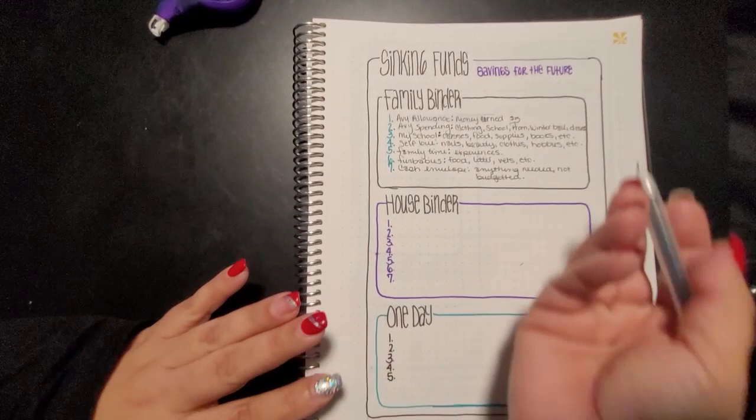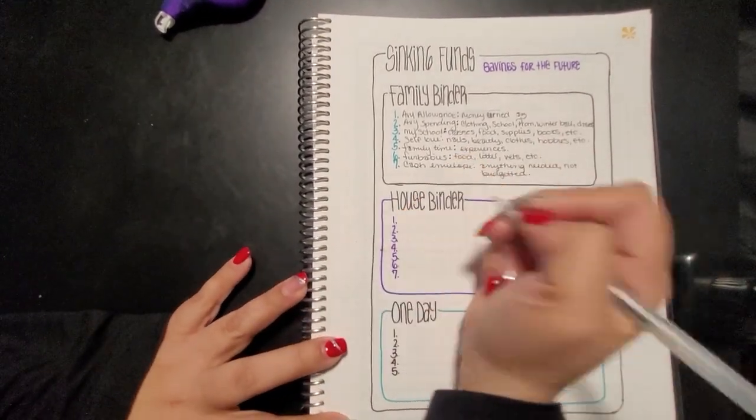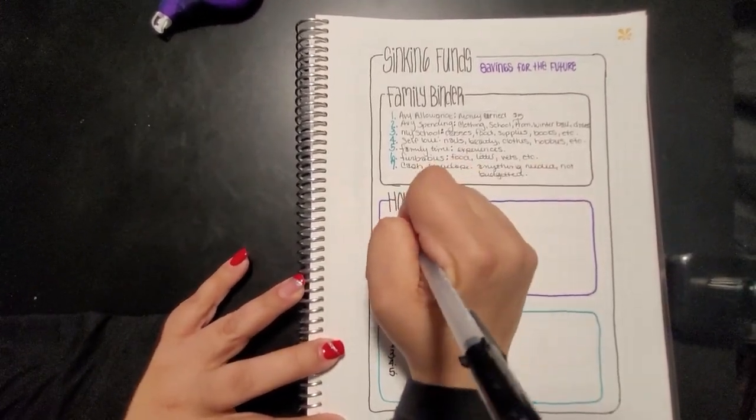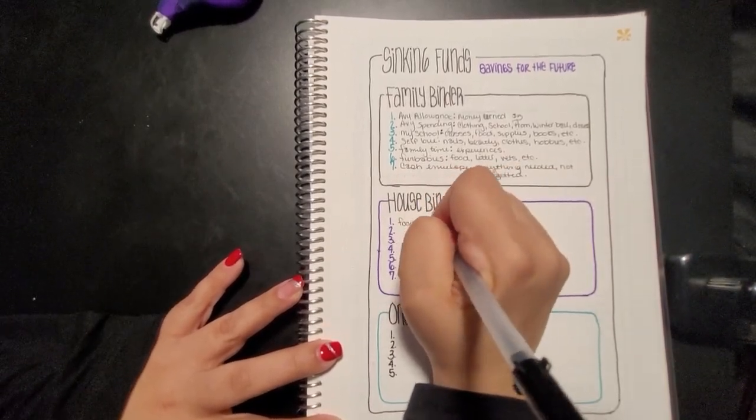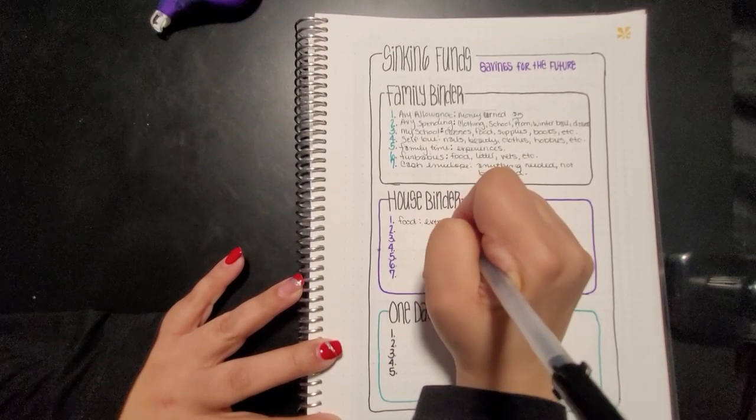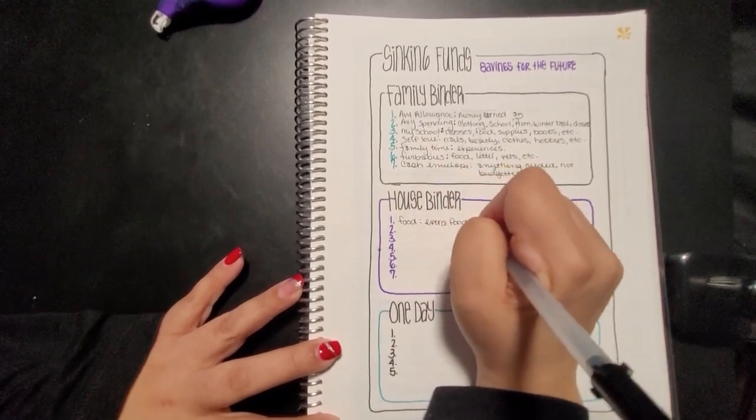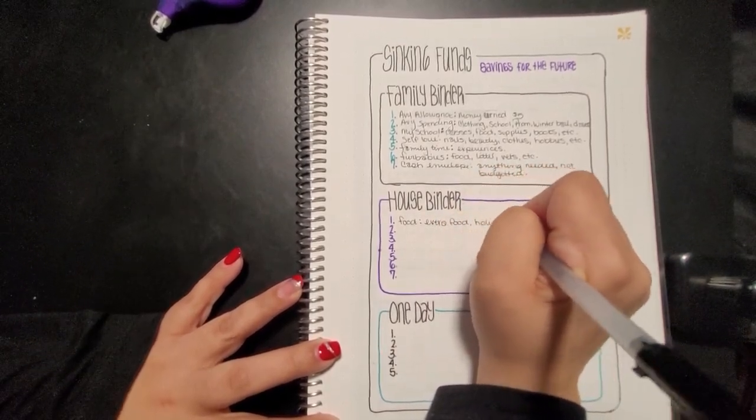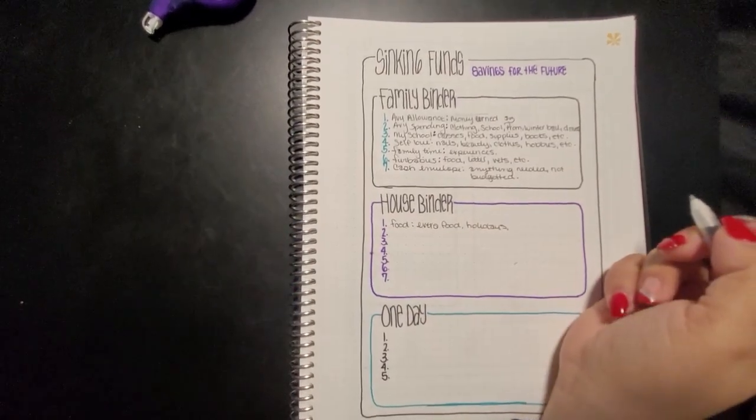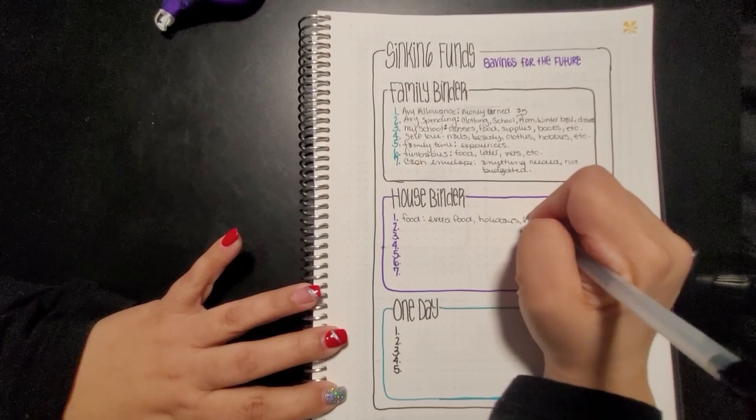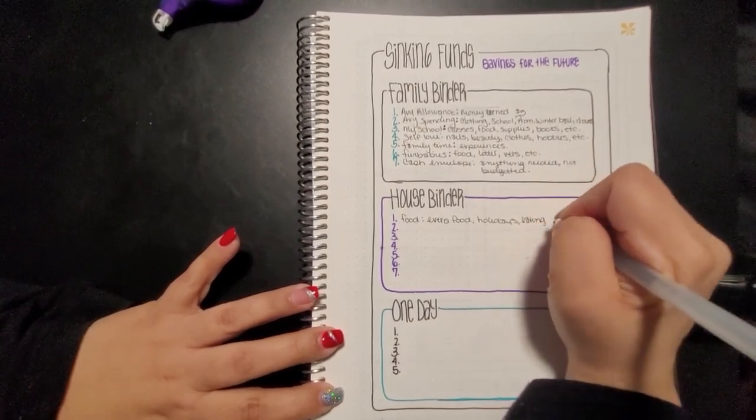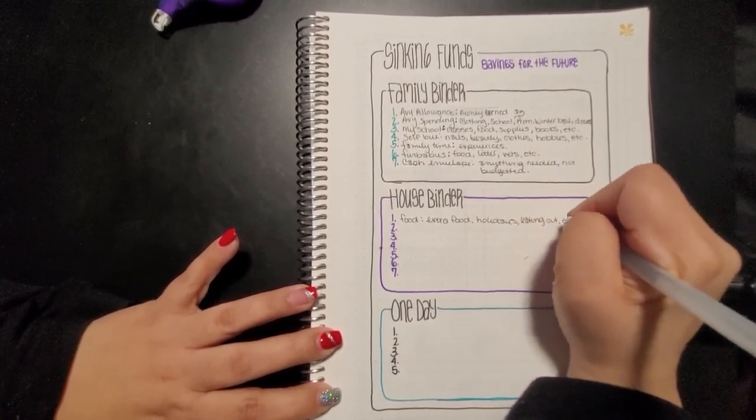So the next one is going to be the house binder. The house binder is going to be for obvious things. Food, right? This is extra food for holidays or I don't know, because you can't ever afford anything because food is so expensive. Eating out, etc.